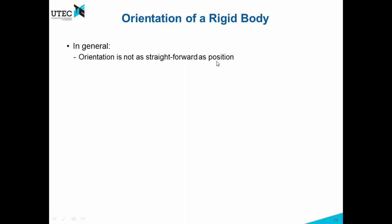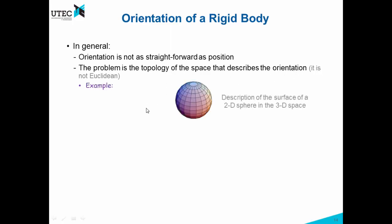In general, orientation is not as straightforward as position. The problem of orientation is the topology of the space that describes the orientation. This space is not Euclidean. For example, you can recall this sphere, which is the surface of a 2D sphere in the 3D space. We could represent this, for example, with latitude and longitude, but then we run into problems when we get to the poles, because there are singularities. We have some similar problem in the orientation, but in this case it's not a 2D sphere, but it's rather a 3D sphere, so the problems are even more severe.